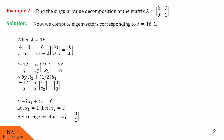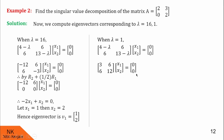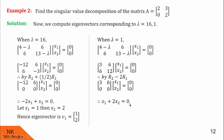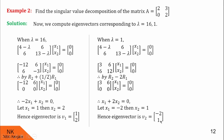Now we obtain the eigenvector for lambda equals 1. Substituting lambda equals 1 into the equation and using transformation R2 minus 2 times R1, we get the equation 3x1 plus 6x2 equals 0, which simplifies to x1 plus 2x2 equals 0. Assigning x1 equals minus 2 gives x2 equals 1. Therefore the corresponding eigenvector is (−2, 1).